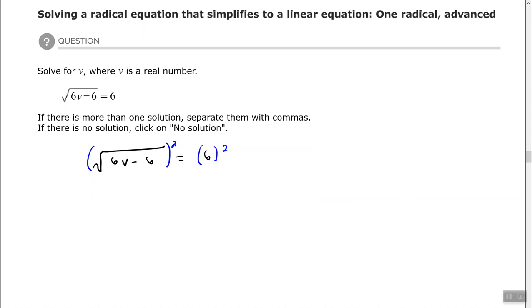All right so now I have 6v minus 6 equals 36. And from here we just want to solve the equation, so to undo the minus 6 we need to add 6 to both sides. So 6 times v equals 42, divide by 6, v equals 7.